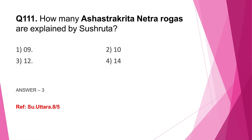Question number 111: How many Ashastra Krita Netrarogas are explained by Sushruta — 9, 10, 12, or 14? This is a direct question from Sushruta Uttara Chikitsa Pravibhaga Vijnaniya. Sushruta Acharya has mentioned 12 Ashastra Krita Netrarogas. Along with this, he also enumerated Chedya Netraroga, Lekhya Netraroga, etc., so do go through those as well.